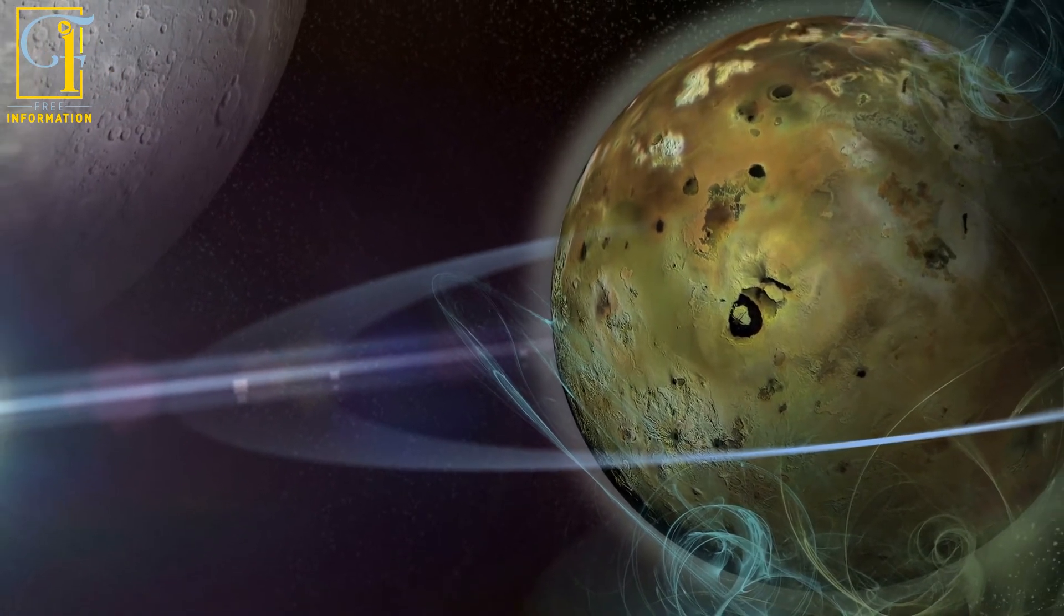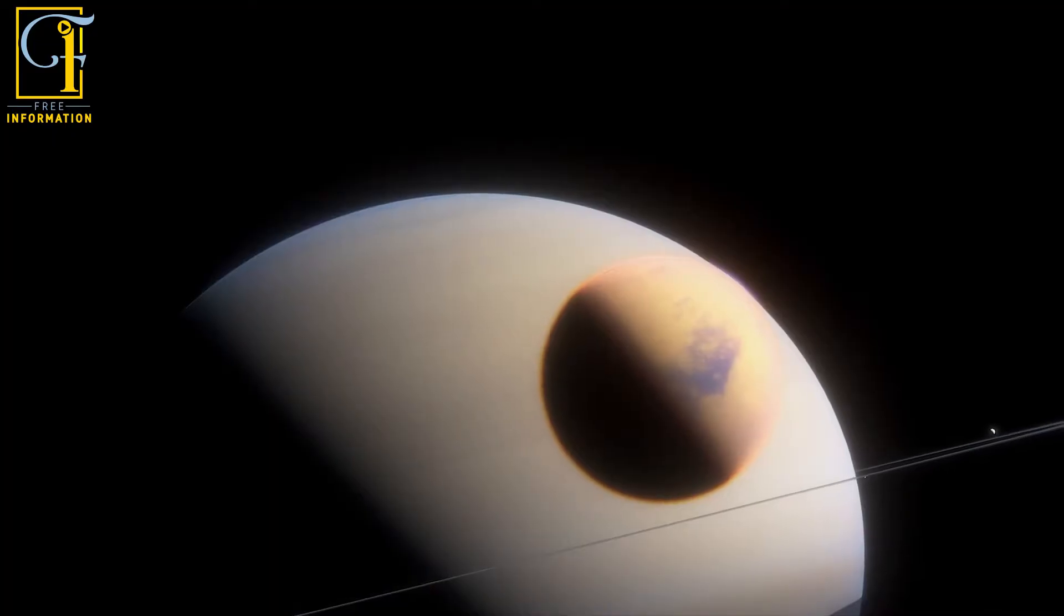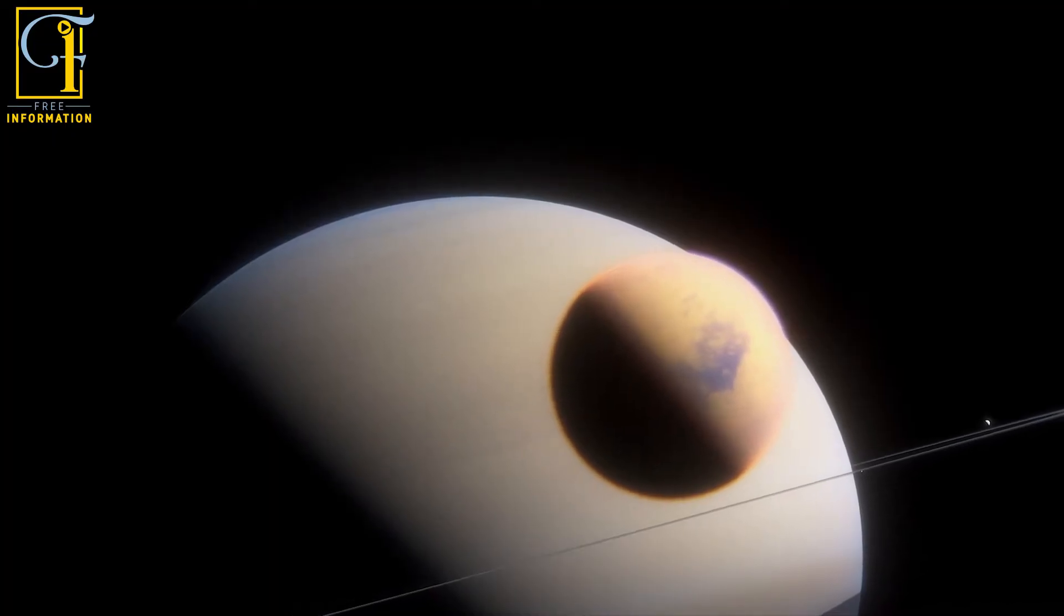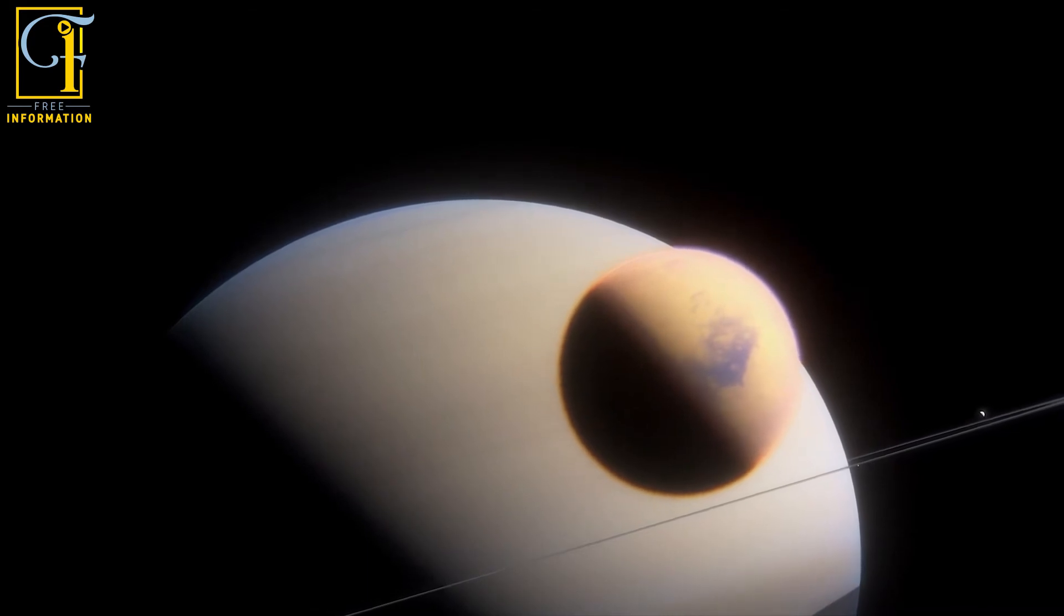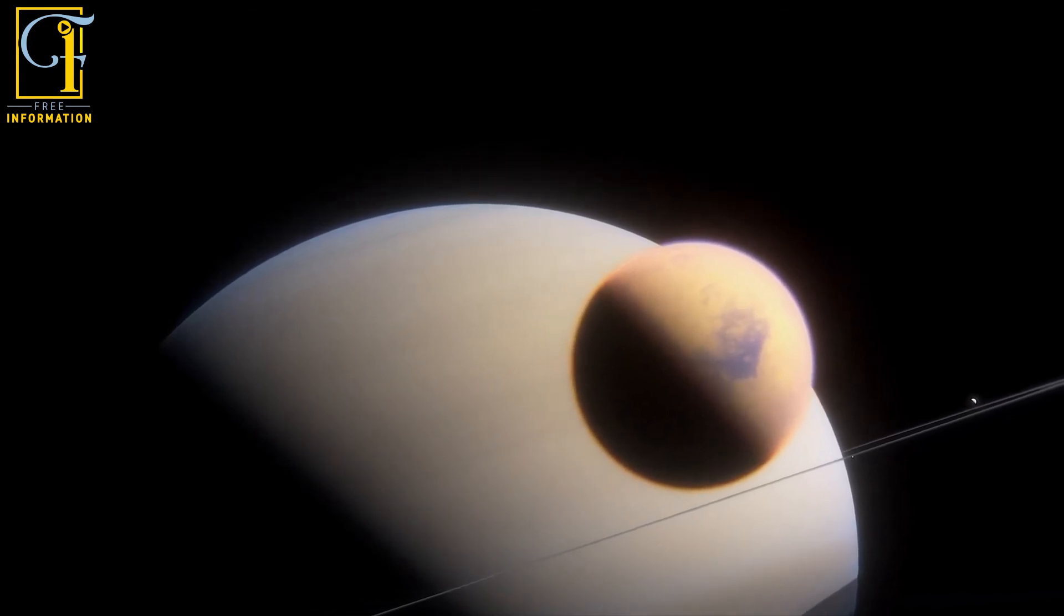The moon Titan is the most famous moon. Its surface is very similar to the surface of planet Earth, with mountains, deserts, valleys, and streams of rivers as well.